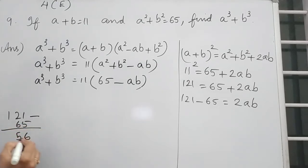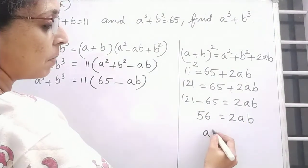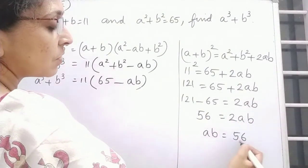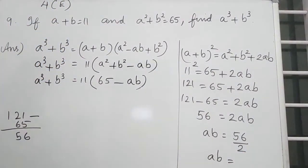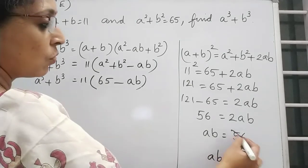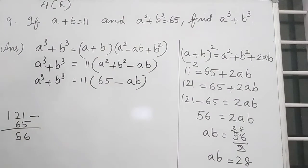56 is equal to 2AB. So AB is equal to 56 divided by 2. That means AB is equal to 56 cancel. So 2 times 2, 2's are 4, balance 1, 8, 2's are 16. So AB is equal to 28.